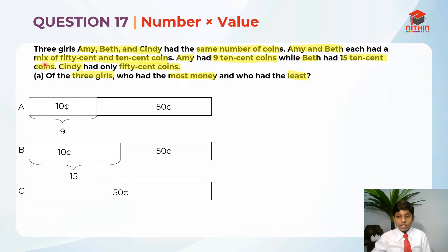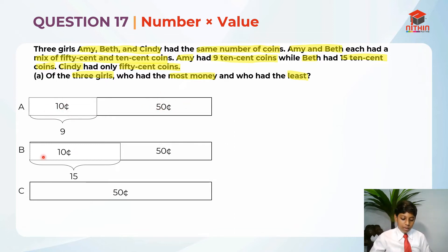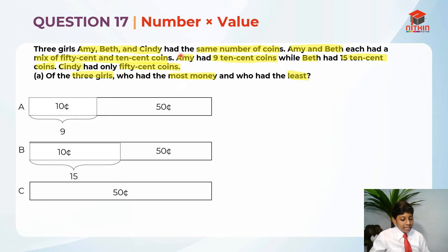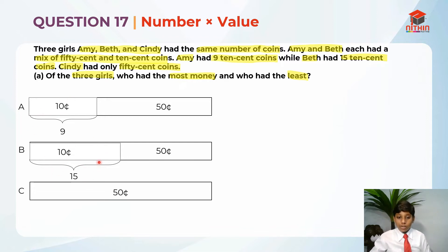Amy and Beth each had a mix of 50 cent and 10 cent coins. This is why Amy had some 10 cent and some 50 cent coins, and Beth also had some 10 cent and some 50 cent coins. Cindy only had 50 cent coins, so she has no 10 cent coins. Amy had 9 ten-cent coins and Beth had 15 ten-cent coins. So these are all the information presented in an easy, visualizable model.